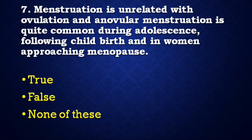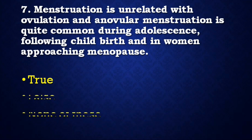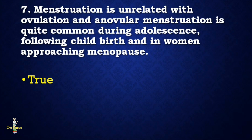Next question: Menstruation is unrelated with ovulation, and anovular menstruation is quite common during adolescence, following childbirth, and in women approaching menopause. The statement is true or false? The statement is true. Menstruation is indeed unrelated to ovulation, and anovular menstruation is common during adolescence, following childbirth, and in women approaching menopause.